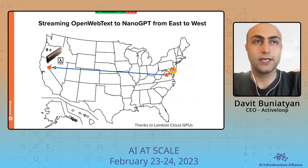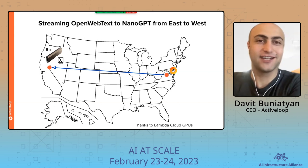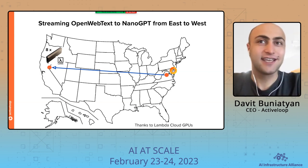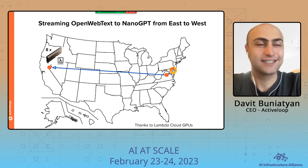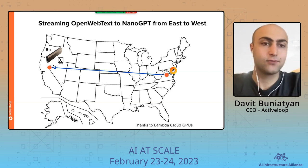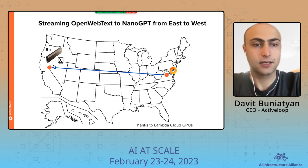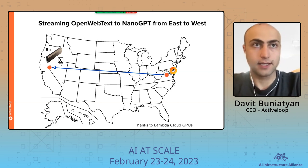You might wonder why we need this. There is a huge problem today with finding GPUs — you might locate GPUs in US East, US Central, US West, or sometimes in Europe or Asia. You have to be very flexible about where your data is stored so that you can kick off the training process without wasting GPU compute time moving the dataset around. This becomes much more critical in those situations.